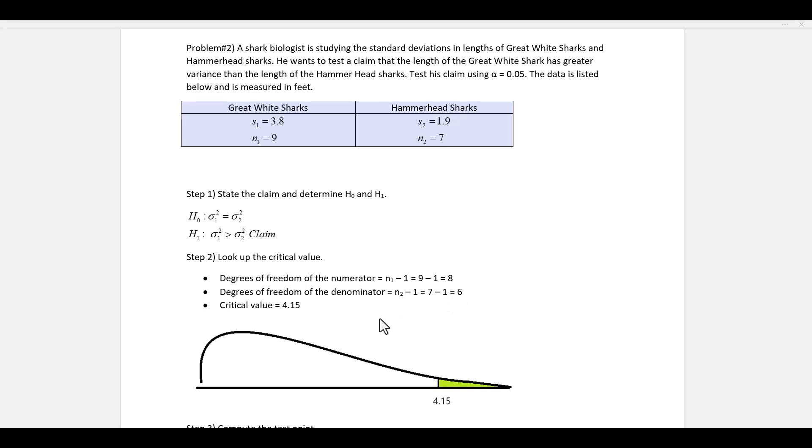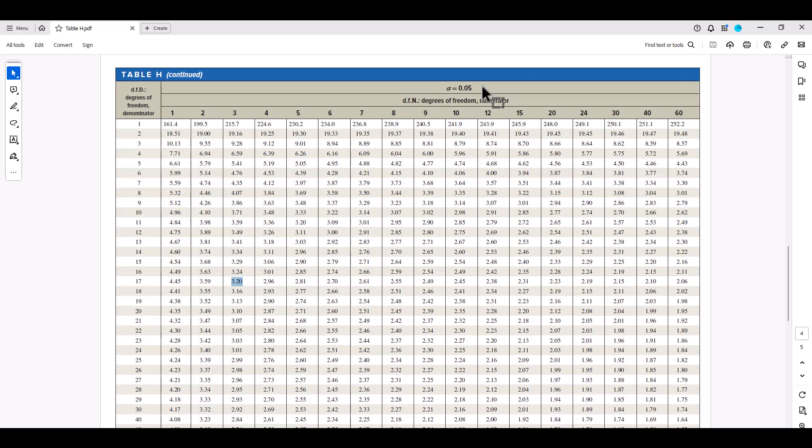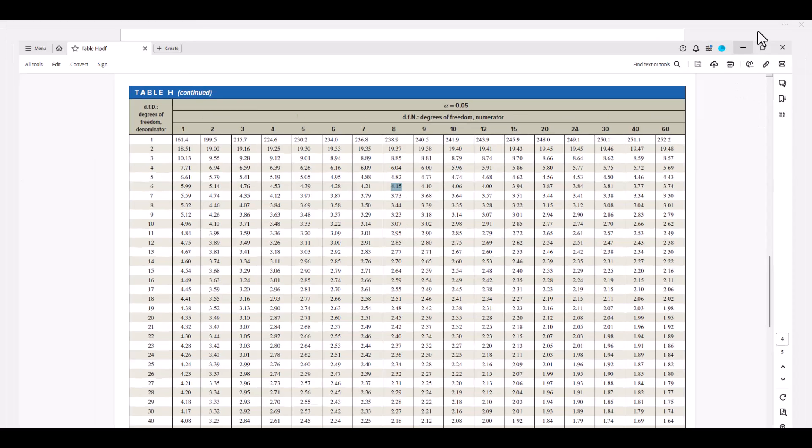To find the critical value, we turn to table H. Alpha is 0.05. We have to go across to 8. That's going to be our degrees of freedom of the numerator, and we go down to level 6. 4.15 is the critical value.